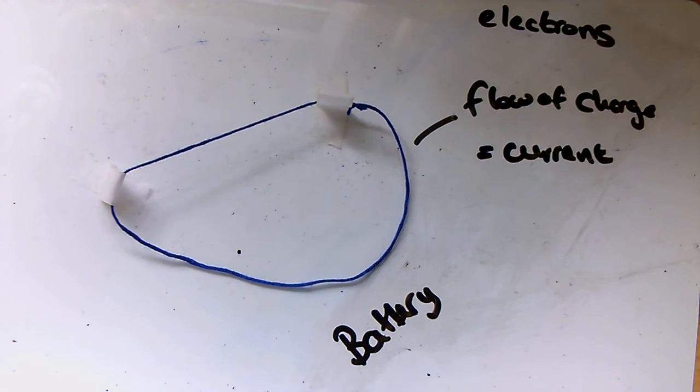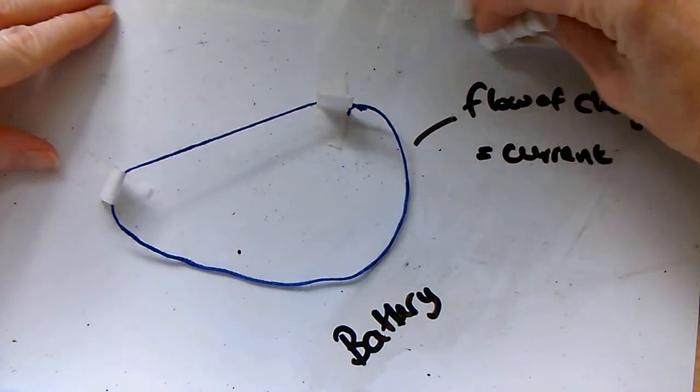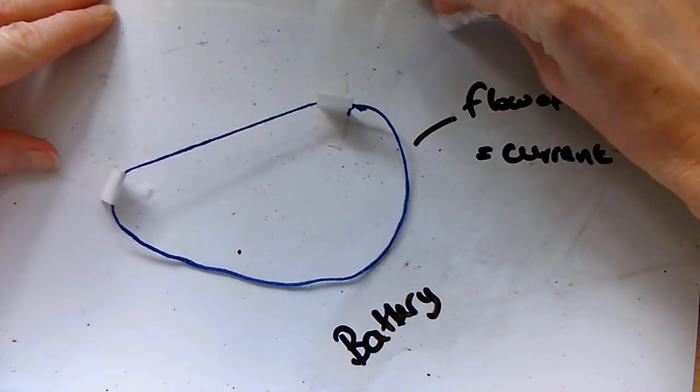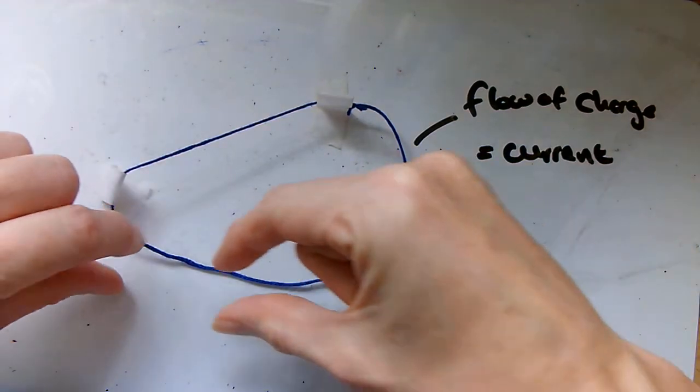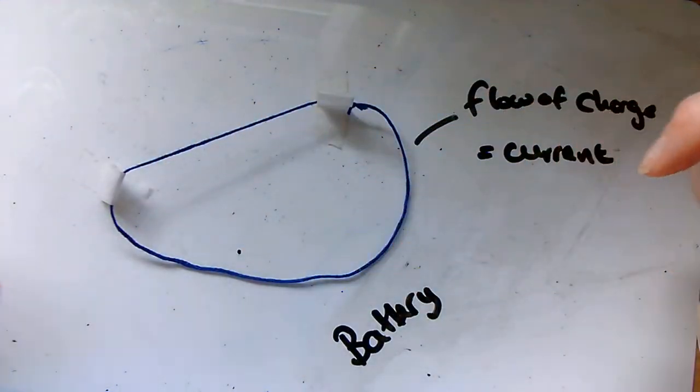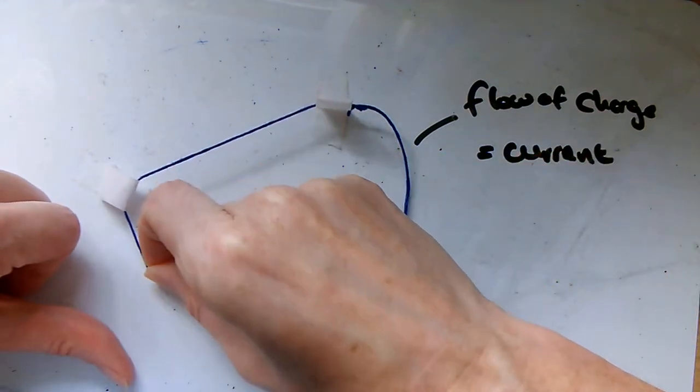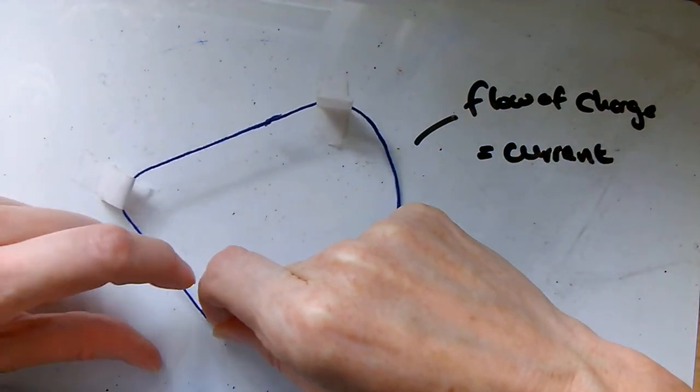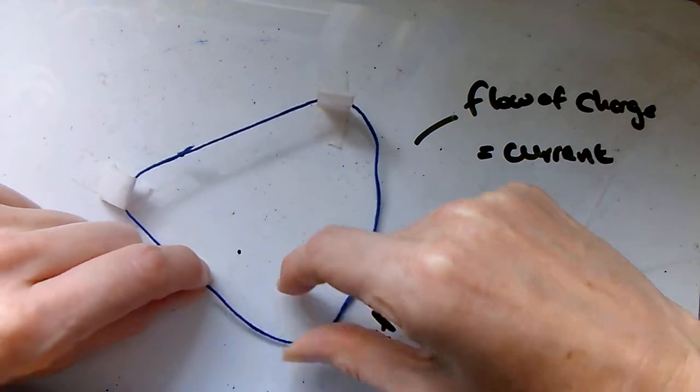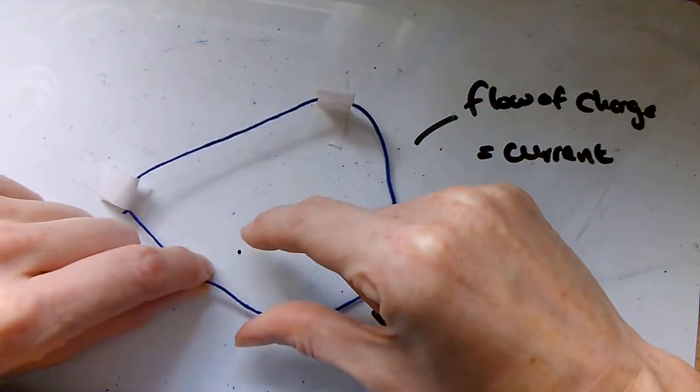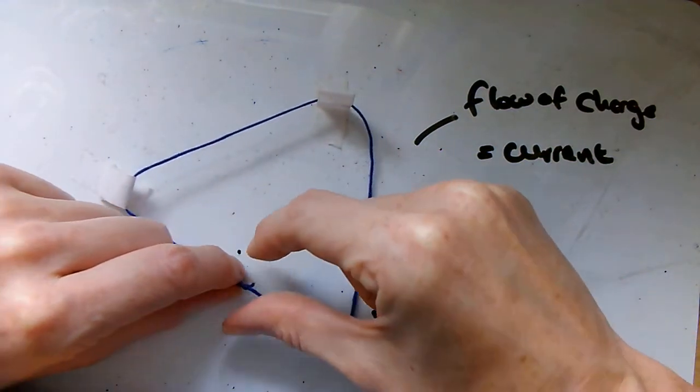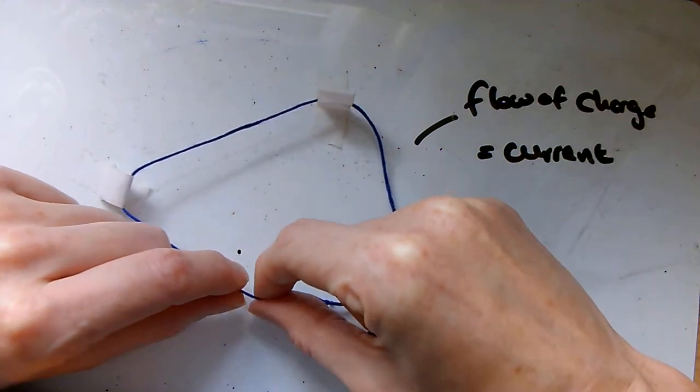What the loop of charge is representing is the current flowing around the circuit. What this model is good at showing is that, as I start, the battery sets the particles in motion. You can see that the current starts to flow.